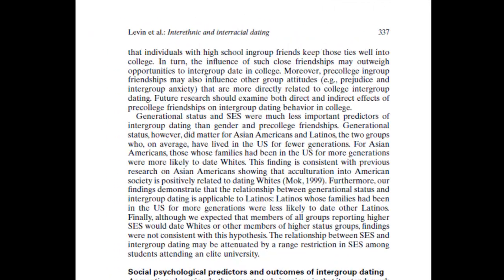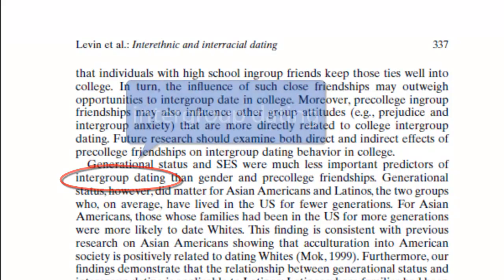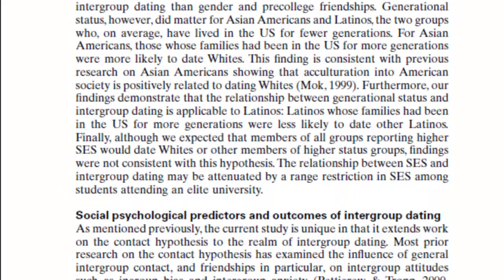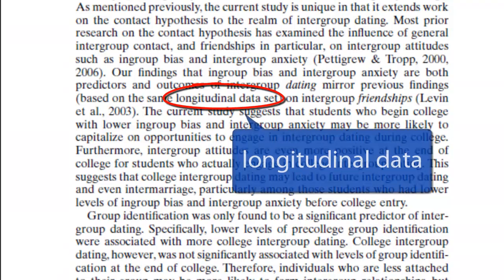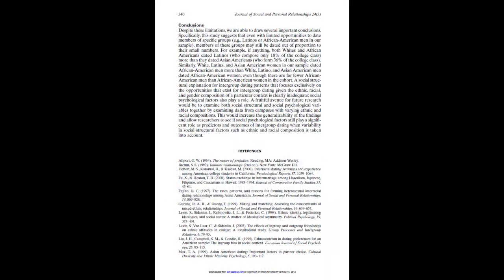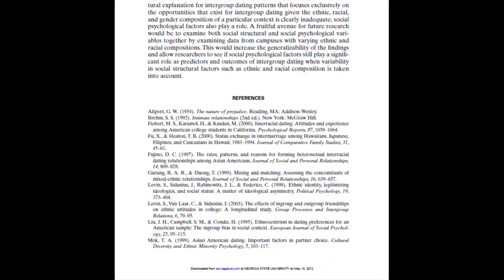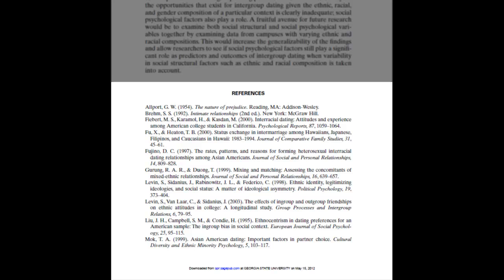A scholarly article will also contain specialized vocabulary, showing that the author has in-depth knowledge of the subject. There will also be footnotes or a bibliography at the end of the article listing the author's sources of information, allowing the reader to consult and verify the material the author used.